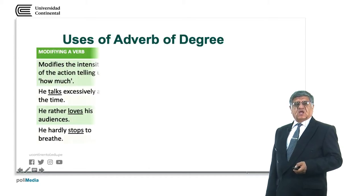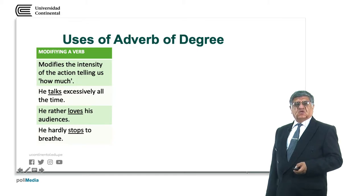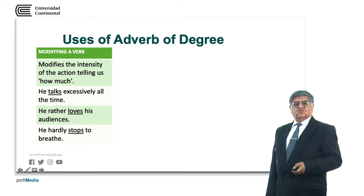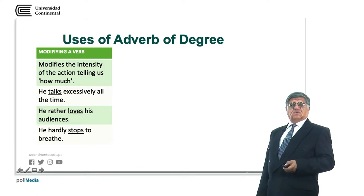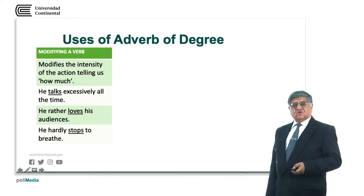When an adverb of degree modifies a verb, it generally modifies the intensity of the action — telling us how much. He talks excessively all the time. He rather loves his audiences. He hardly stops to breathe. Talks is the verb and excessively is modifying it, and as you can see it is after the verb. But in the second and third examples, rather and hardly go before the verb.